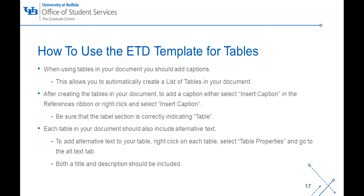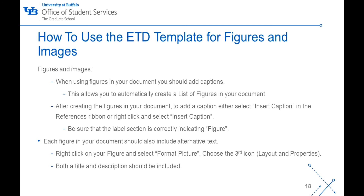For figures and images, you should also add captions. Adding the captions will allow you to automatically create a list of figures in your document. After adding the figures or images, to add the caption, either select Insert Caption in the References ribbon or right-click and select Insert Caption. Make sure the Label section is correctly indicating Figure. Each figure or image should include alternative text. To enter the alternative text, right-click on the figure or image and select Format Picture. Choose the third icon, which will be Layout and Properties. Again, both a title and description should be included.